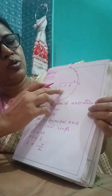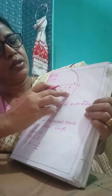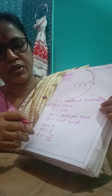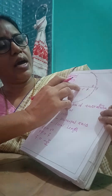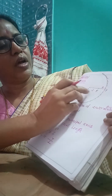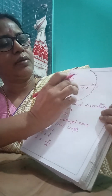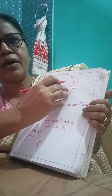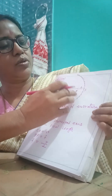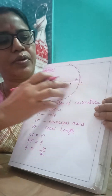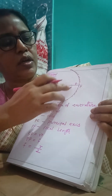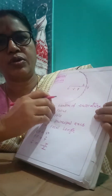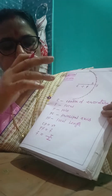The radius of curvature is represented by R. Since PC equals CF plus PF, we get R equals 2F. Therefore, F equals R divided by 2.